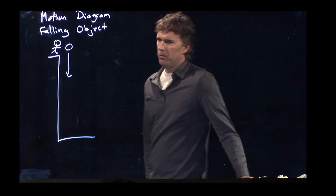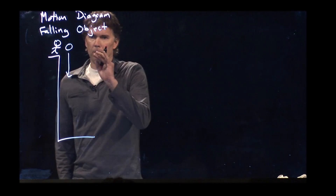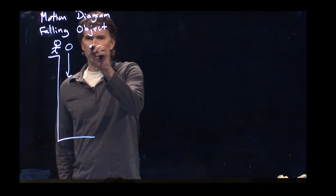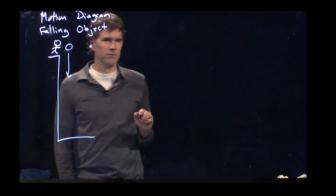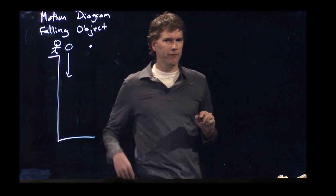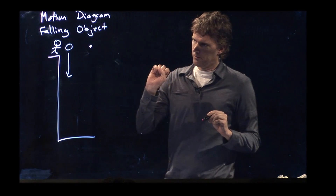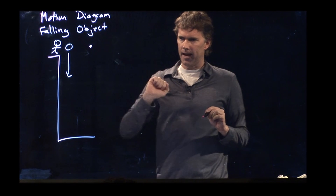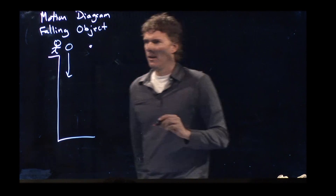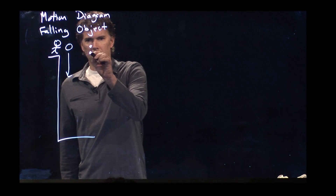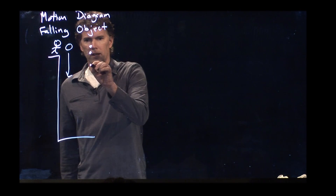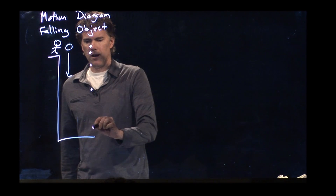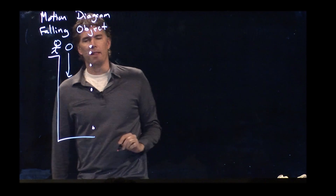Well, like we said before, the ball you can represent with a dot. So the first time that your camera takes a picture of this thing, the ball is at that height. The next time it is there, then it's there, then it's there, and then it's there.